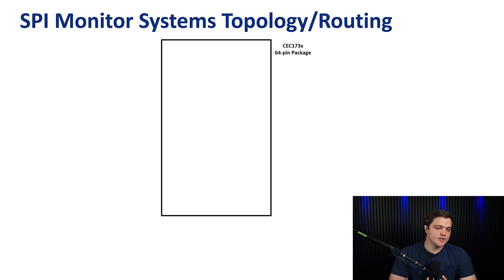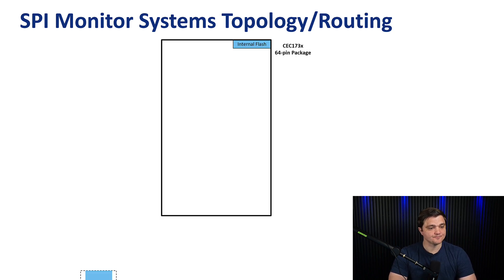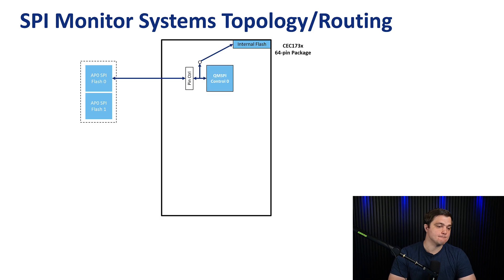To simplify things, we'll cut this down to a 64-pin package CEC173X. This can be thought of as a bisection of the 84-pin package, in that it secures one SPY bus, whereas the 84-pin package can secure two SPY buses in parallel. The first block of note is our internal SPY flash. This is where we store our Soteria code images, which is the firmware that the SPY Monitor runs on. Our next block is our external SPY flashes, which is where you store the code that's going to run on your application processor — the code we're interested in making sure is secure. Next, we have a QM SPY control, which allows Soteria — our SPY Monitor firmware — to chip select between the flash components that you have.